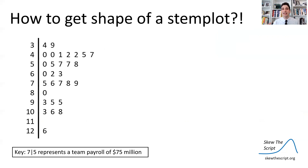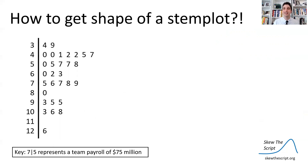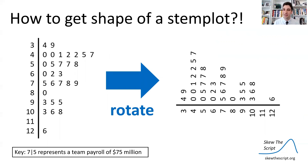You might be wondering how to get the shape of a stem plot. All you have to do is rotate it 90 degrees counterclockwise, and you have it on a horizontal axis. You can see here this is right skew, consistent with what we saw in the histogram of team payrolls.